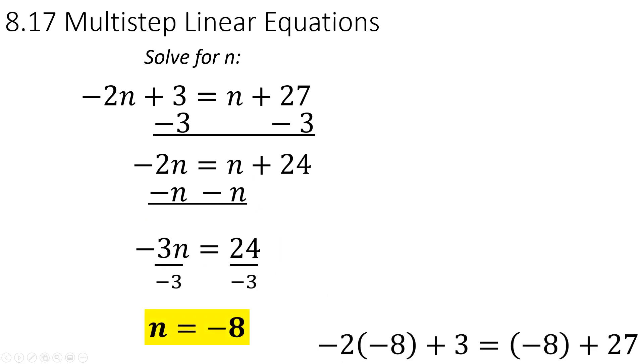So, when you check this, if you plug in the left side of the equation into Desmos and plug in the right side on another line, they're going to work out to the same thing. 16, that's 16 plus 3 is 19. And this is going to be basically negative 8 and 27 also give you 19. So, they do work out.